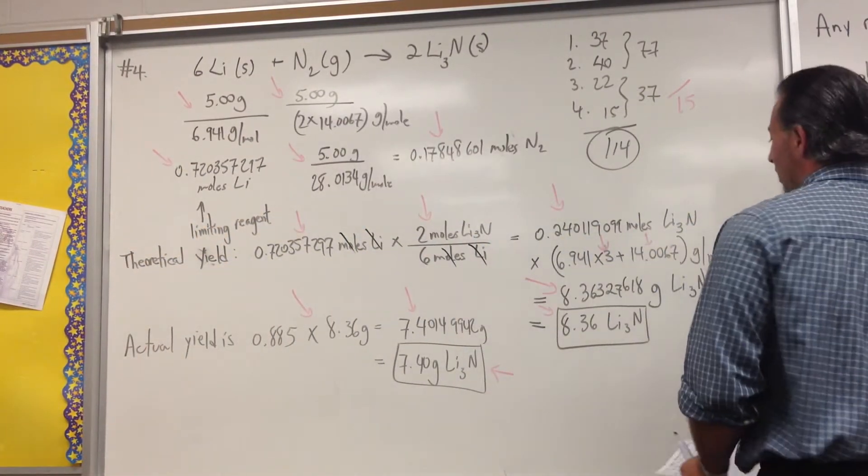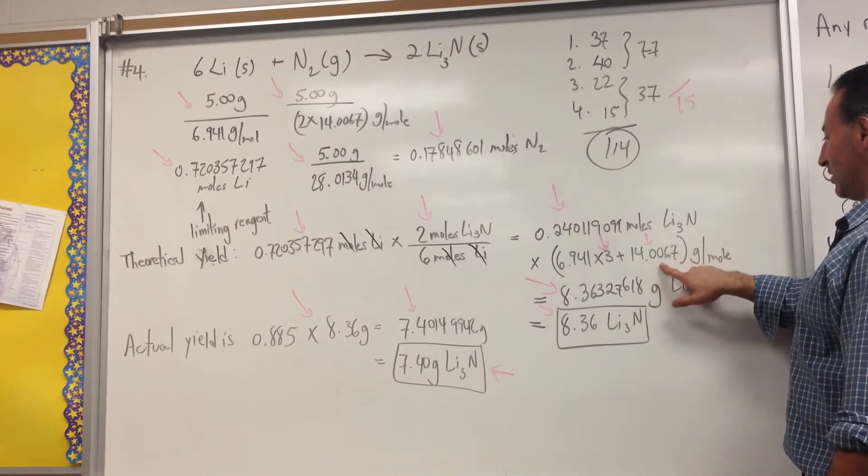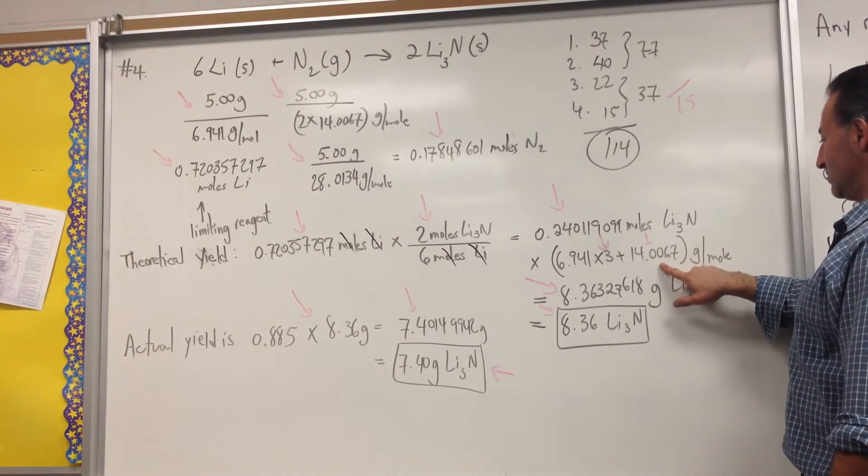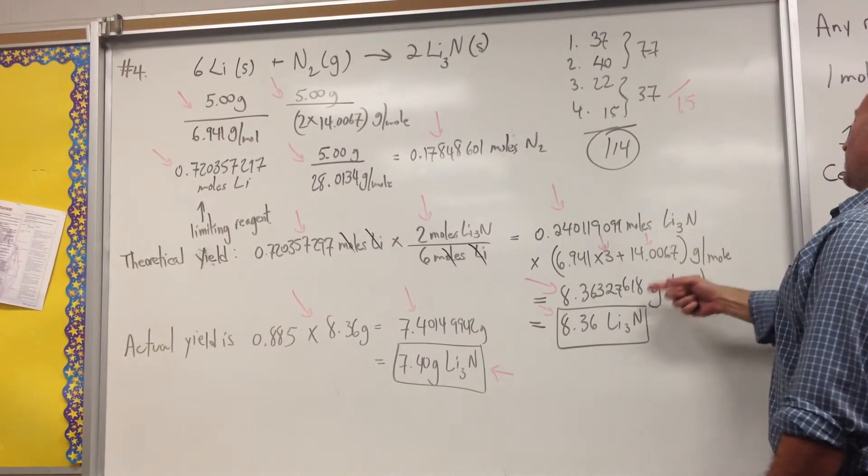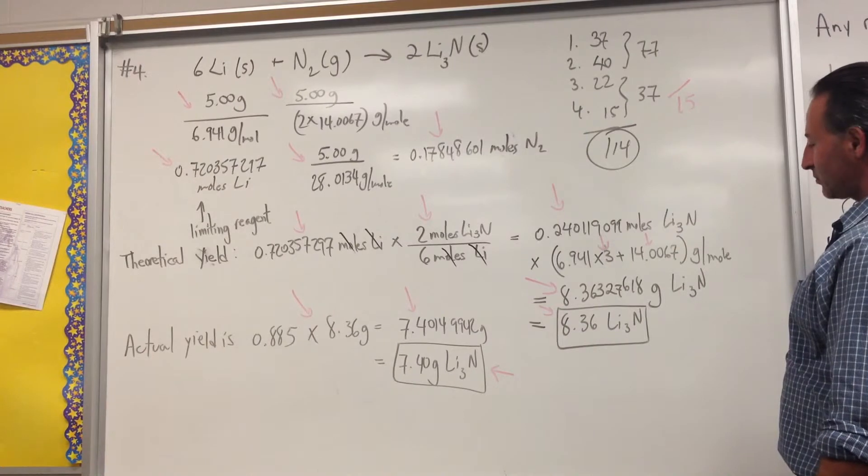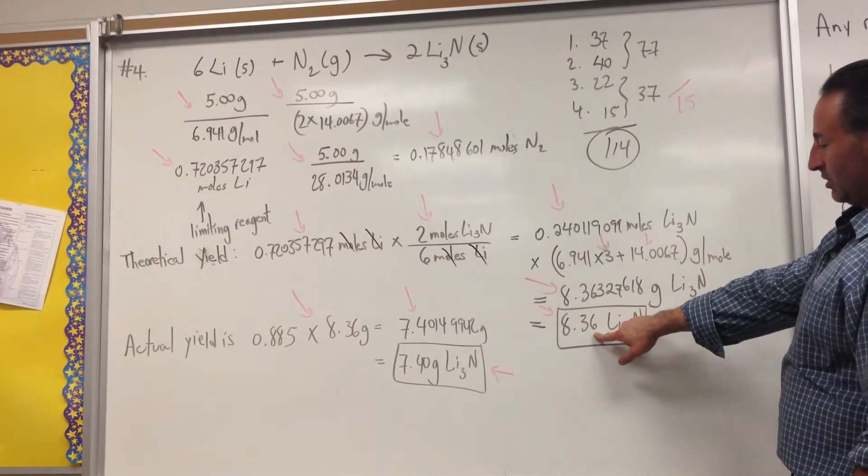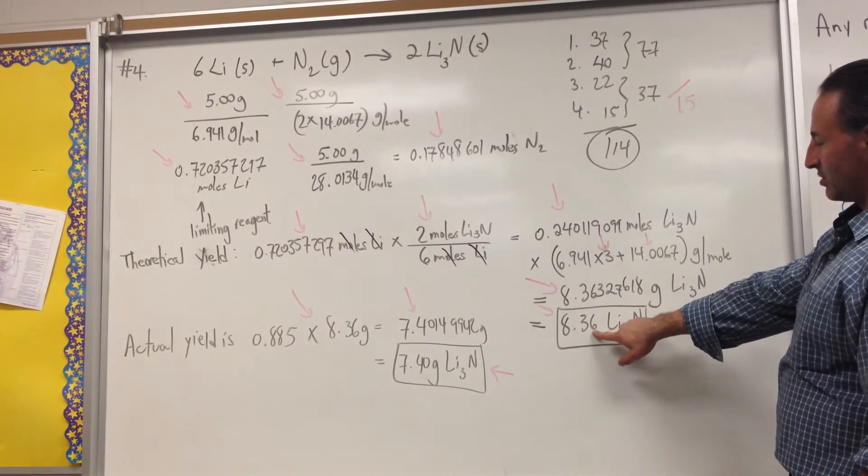We multiply by the molar mass of lithium nitride, which includes 3 times the mass of lithium, 1 times the mass of nitrogen. We get that it produces 8.36 grams of lithium nitride. We also recall that you're only about to report it to 3 significant figures of accuracy. So, that's the final answer.